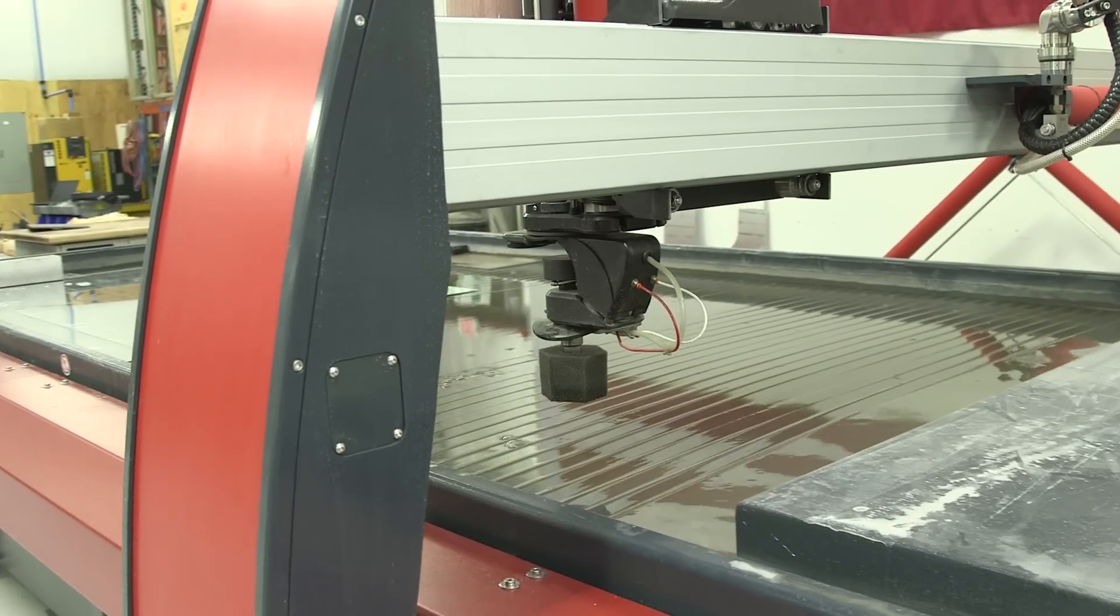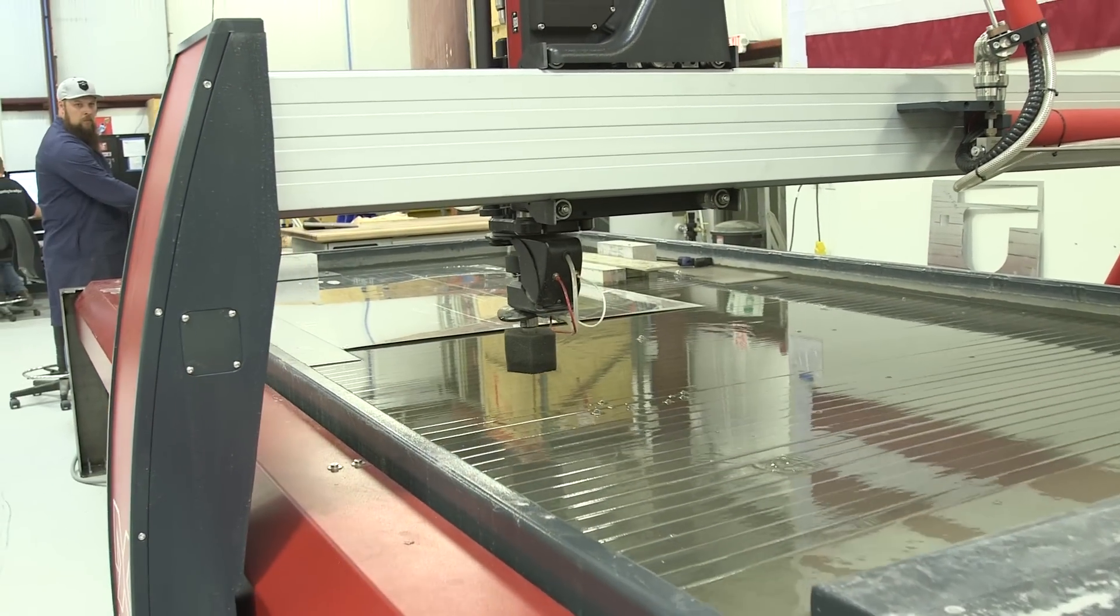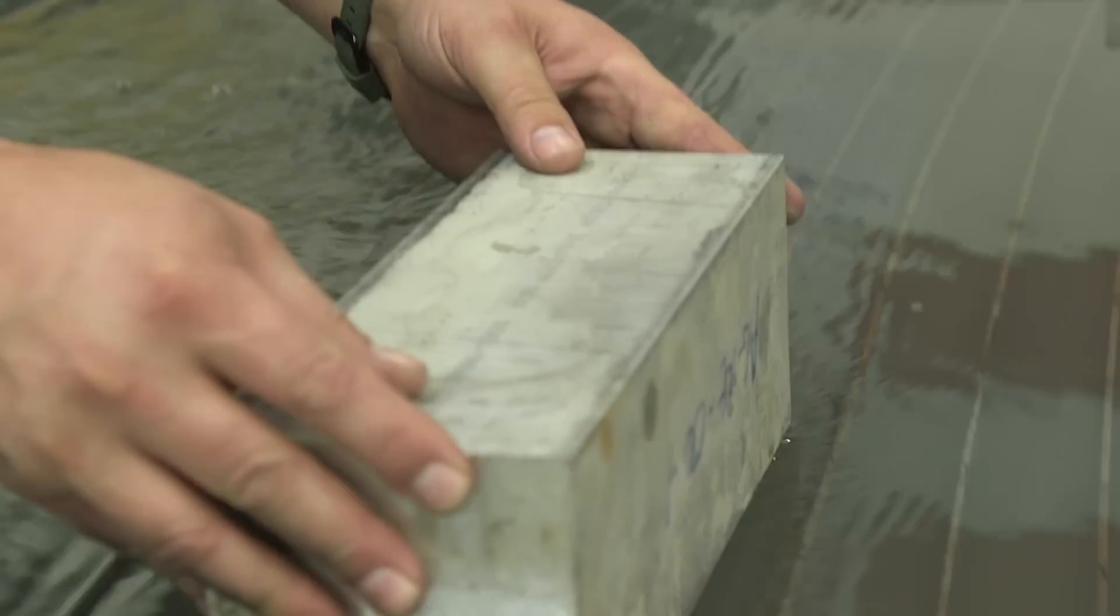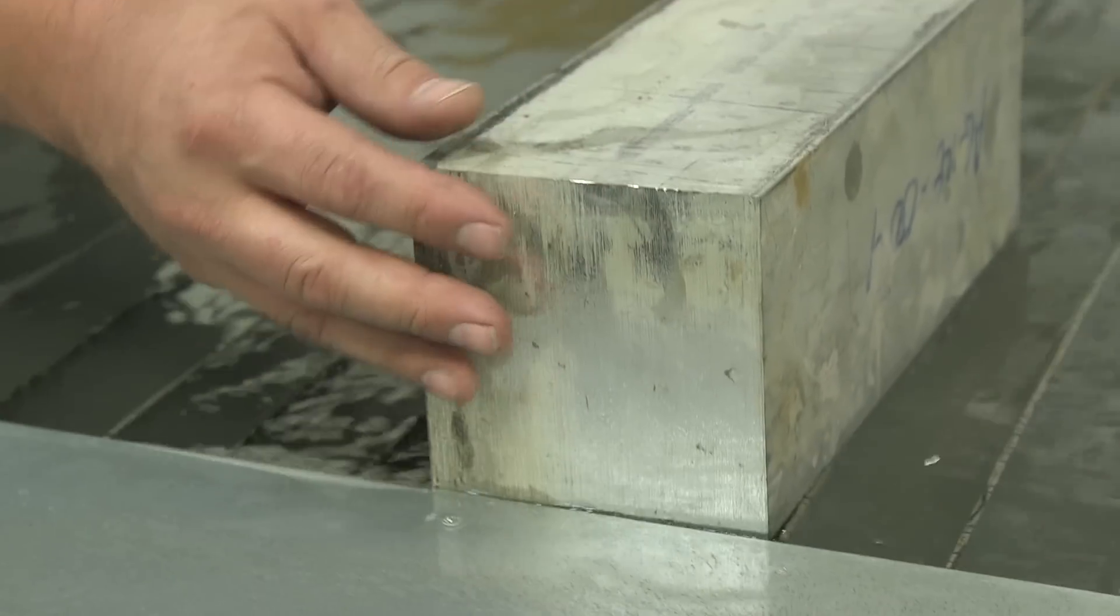Let me explain a little bit about this machine itself and why it's such a big deal. We can cut 6 foot by 15 foot sheets. We can cut up to 6 to 8 inch steel and aluminum on this with three thousandths of an inch accuracy.